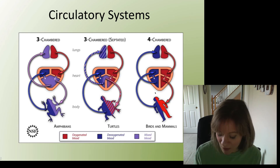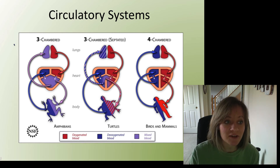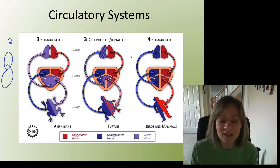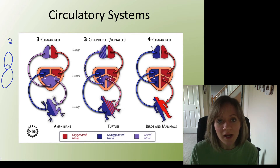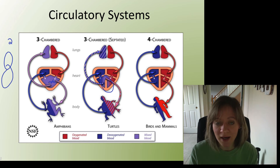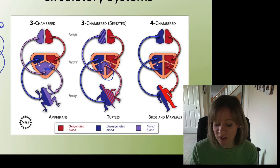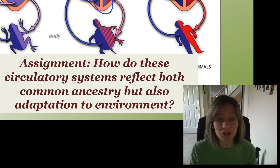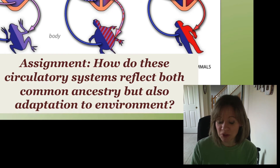Now for circulatory systems: fish have a two-chambered heart, which is very simple. Instead of me explaining the evolution of the circulatory system from two to four chambers — note that reptiles have a septum here whereas amphibians do not — I want you to think about this evolution. How do these systems reflect both a common ancestry but also adaptation to a specific environment? That shouldn't be too hard.